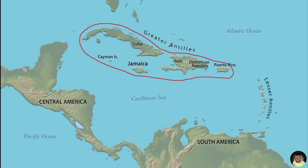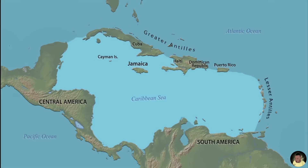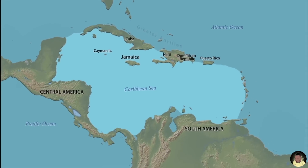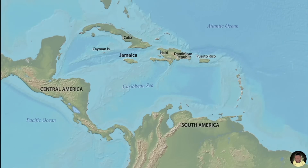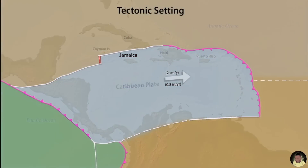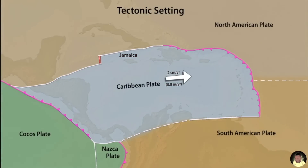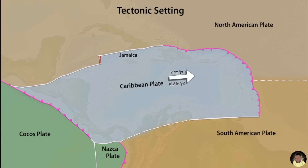Jamaica is the third largest island of the Greater Antilles along the Northern Caribbean Sea. The Greater Antilles straddle the northern boundary of the Caribbean Plate, a mostly oceanic plate that moves two centimeters per year eastward with respect to the North American Plate.